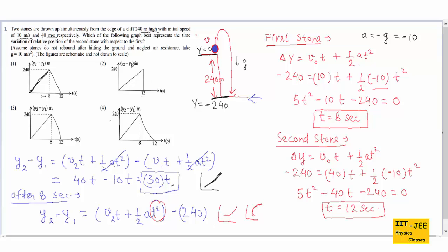Let's check all graphs. The first graph shows a straight line followed by another straight line — that is wrong, since after 8 seconds the graph must curve. The second graph shows a straight line but indicates both stones reach the ground at 12 seconds, which is wrong because the first stone reaches the ground at 8 seconds. Looking at graphs three and four, both show a straight line up to 8 seconds, which is correct. After 8 seconds the graph must curve — but which direction? To determine that, we check the slope.